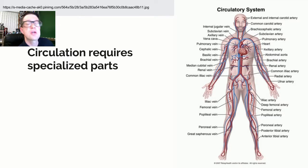When we look at circulation, it turns out we have some required parts. So if we look at circulation, we need to have a pump, let's call it the heart. We need to have pipes, let's call them blood vessels, and we need to have a fluid, let's call it blood.